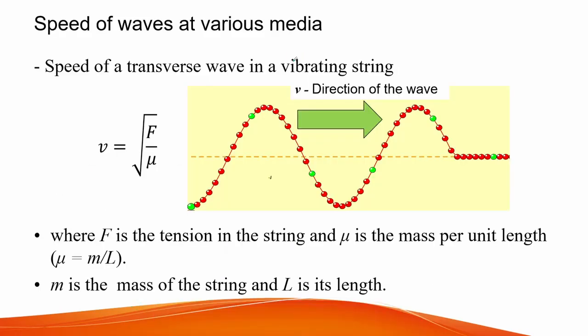Speed of waves is altered based on the medium. For waves traveling on a string, the speed of the wave depends on the tension force and the linear density of the string, where linear density is mass over length. The speed of a wave is equal to the square root of the ratio of the tension force over the linear density.